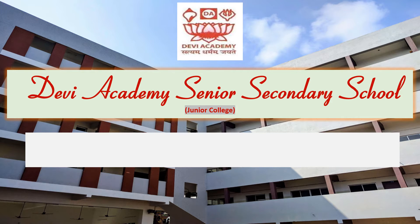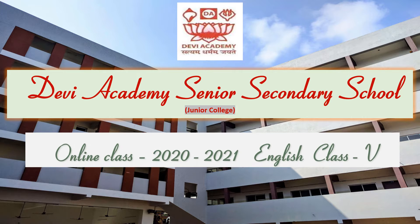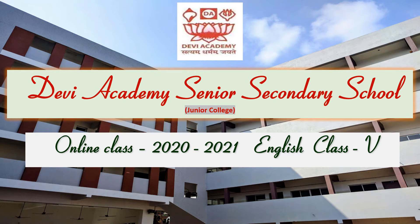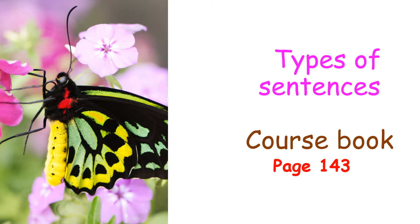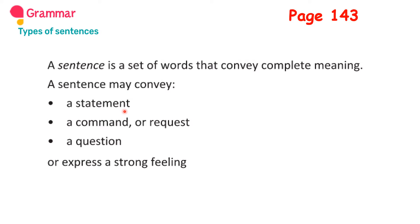Good morning children, welcome back. This is your English online class for standard 5. Open your course book to page 143. You will see the topic: Types of Sentences. A definition is given in your textbook. A sentence is a set of words that convey complete meaning.